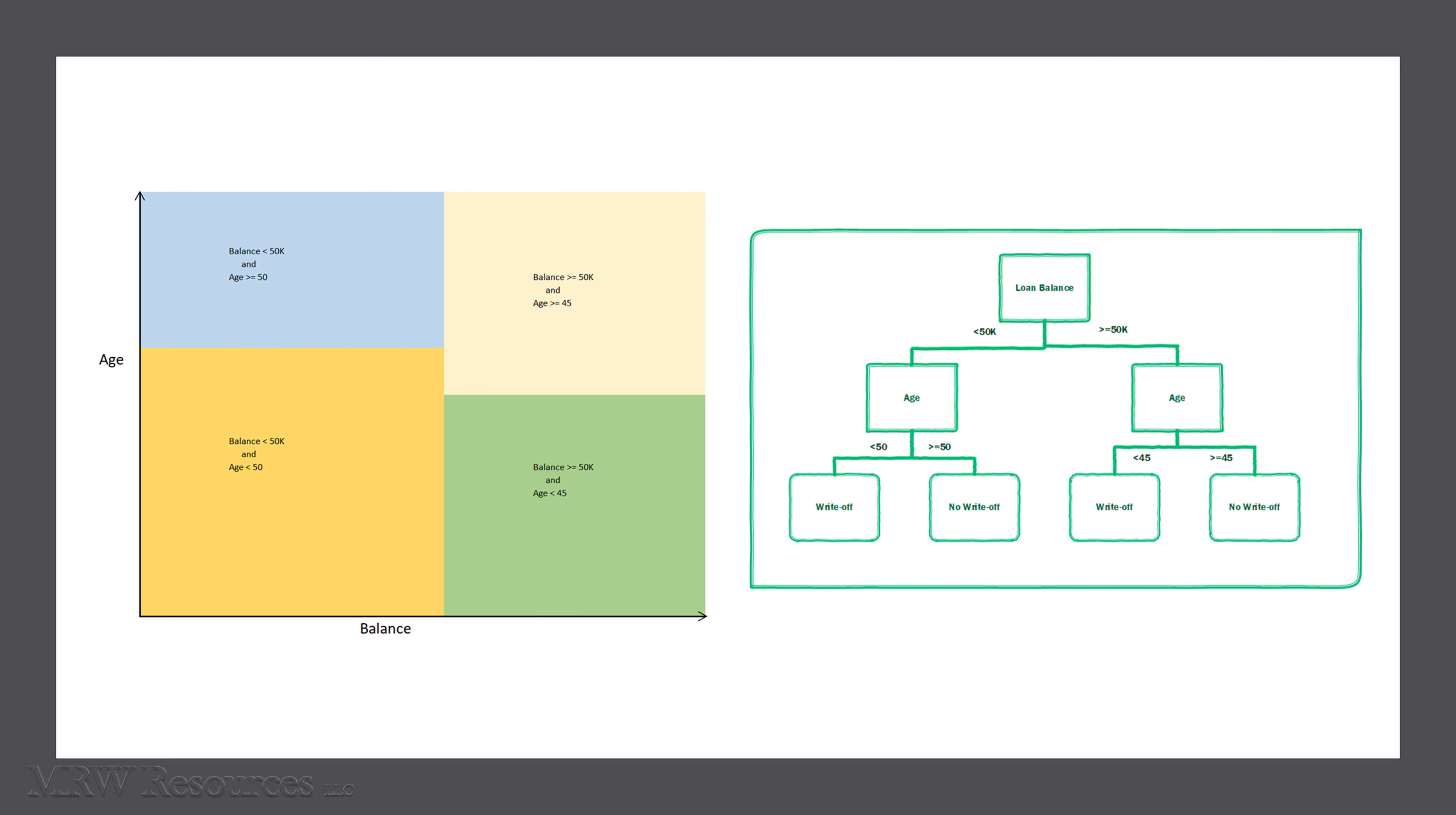Now note that each decision boundary is perpendicular to one of the attribute axes. We've got balance less than 50k - that goes up perpendicularly to the balance axis. We've got age greater than or equal to 50 - that goes perpendicular to the age axis. That gives us our light blue decision area there with the boundaries at the edge.